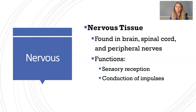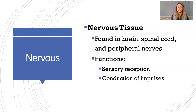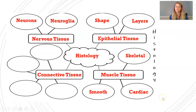Moving on to nervous tissue: it is found in the nervous system — the central nervous system including the brain and spinal cord, and all the nerves of the peripheral nervous system. If we were to assign one word to describe the function of nervous tissue, we'd say control or communication. Its roles include sensory reception, receiving stimuli, and conduction of impulses so we can control and communicate throughout the body. There are two types of nervous tissue: neurons and neuroglial or glial cells.